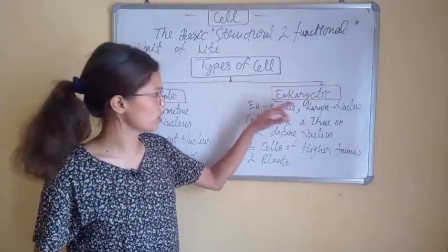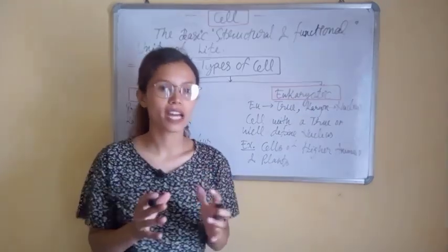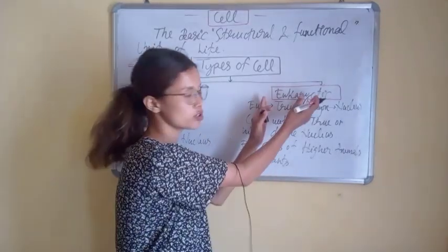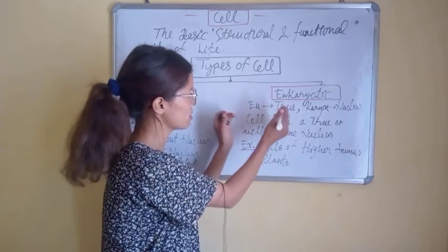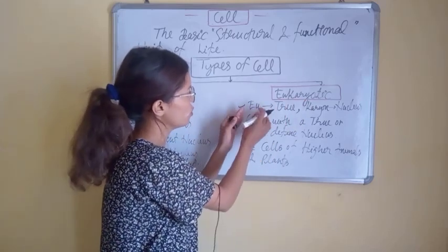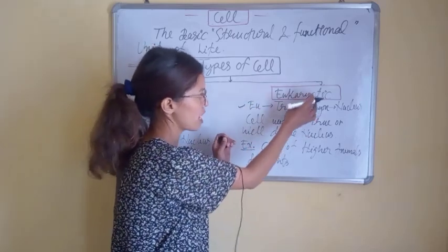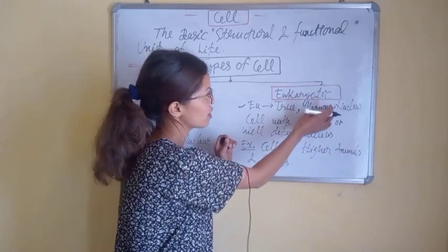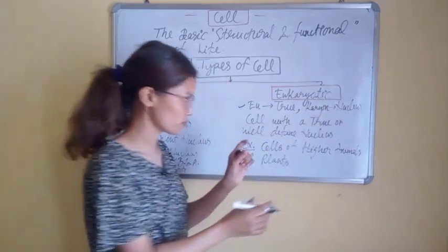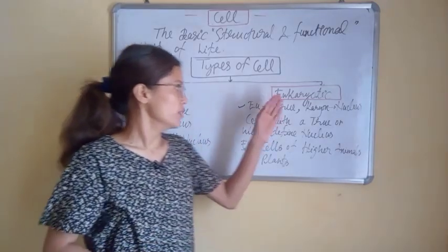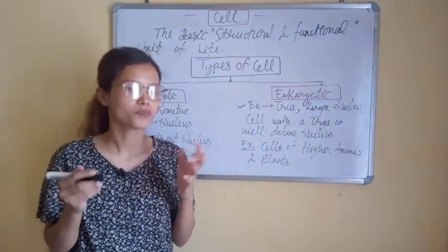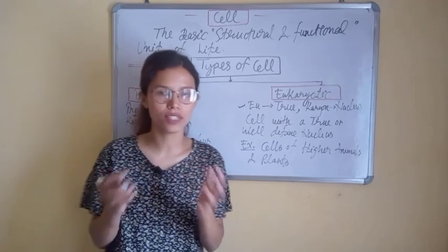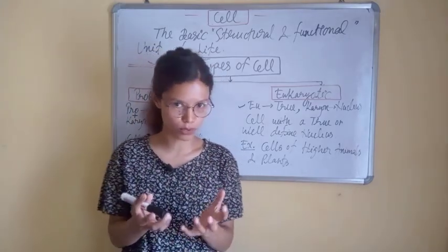Let's move on to eukaryotic cells. What is a eukaryotic cell? The word eukaryotic is also from Greek, where 'eu' means true and 'karyon' means nucleus. So we can say eukaryotic cell is the cell which has a true nucleus or a fully developed nucleus.